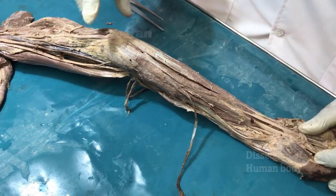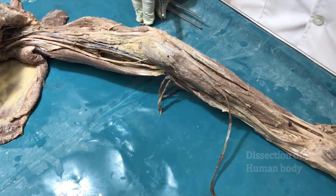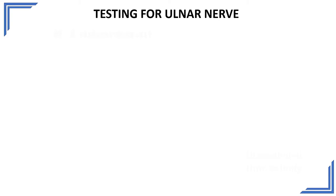With this we come to the end of the discussion on the ulnar nerve. Having learnt the normal anatomy of the ulnar nerve and its distribution, now let us learn a little about its applied aspects. First, let us learn how to test for the ulnar nerve. I hope all of you know the muscles innervated by the ulnar nerve and the cutaneous distribution of the nerve. To test whether the ulnar nerve is intact, we have some named tests.